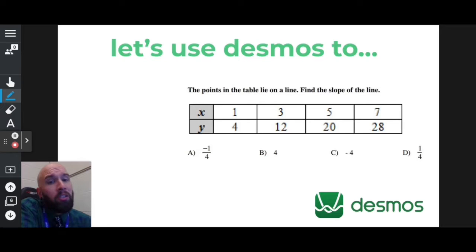Hi, everybody. Let's use Desmos to find the slope of a line connecting all four of these points. Oh, I wonder how it's done.